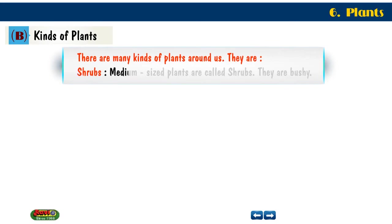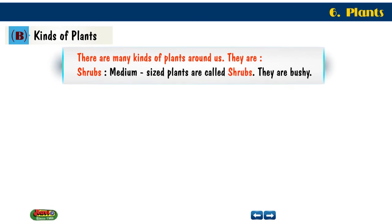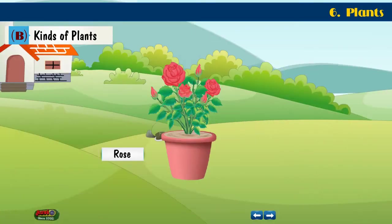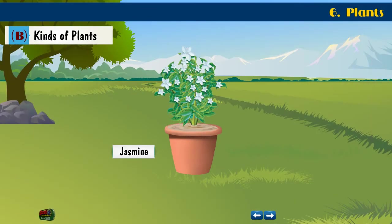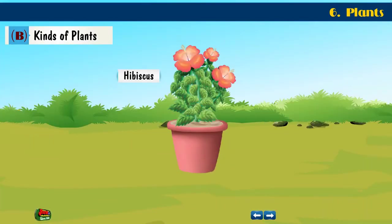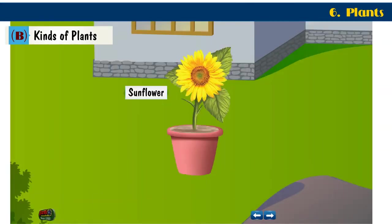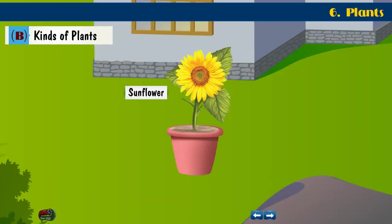Medium-sized plants are called shrubs. They are bushy. Examples of shrubs are rose, jasmine, hibiscus, and sunflower.